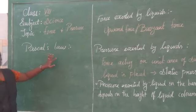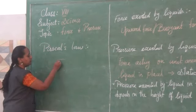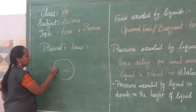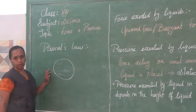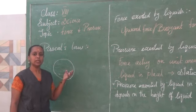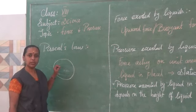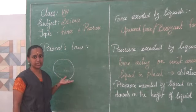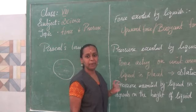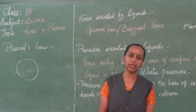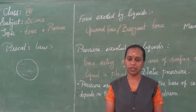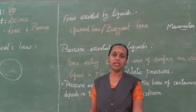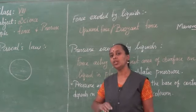Pascal's law says: take a rubber ball, fill it with water, make tiny holes at any place on the ball, and give a press over the ball. What happens? The water starts to rush out with the same force — the pressure is transmitted equally and is equally distributed. That is called Pascal's law. The pressure exerted by liquids at rest in a closed circuit is equally distributed through the surface of the liquid.